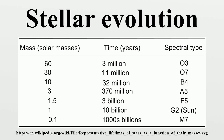A new star will sit at a specific point on the main sequence of the Hertzsprung-Russell diagram, with the main sequence spectral type depending upon the mass of the star. Small, relatively cold, low-mass red dwarfs fuse hydrogen slowly and will remain on the main sequence for hundreds of billions of years or longer, whereas massive, hot O-type stars will leave the main sequence after just a few million years. A mid-sized yellow dwarf star, like the Sun, will remain on the main sequence for about 10 billion years. The Sun is thought to be in the middle of its main sequence lifespan.